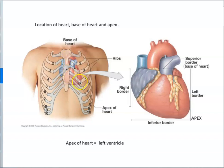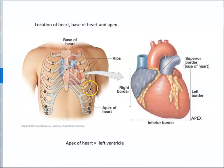And what else? Oh, here's the apex. You notice most of the heart is towards the left side. Here's the right side of the heart right here — you can see the right atrium — but the bulk of the heart is going to be left of center. This is showing you the apex and the base of the heart right here.